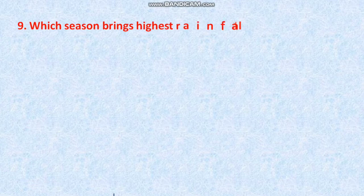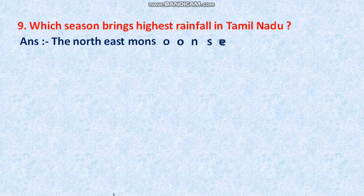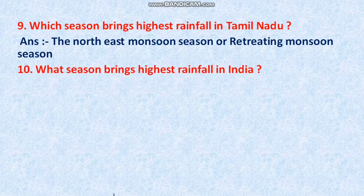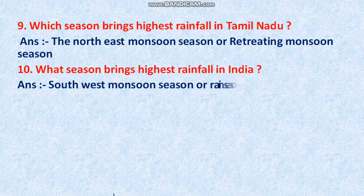Question 9: Which season brings the highest rainfall in Tamil Nadu? The answer is the Northeast Monsoon Season, also called the Retreating Monsoon Season. Question 10: Which season brings the highest rainfall in India overall? The answer is the Southwest Monsoon Season, also called the Rainy Season, which brings the highest rainfall in India.